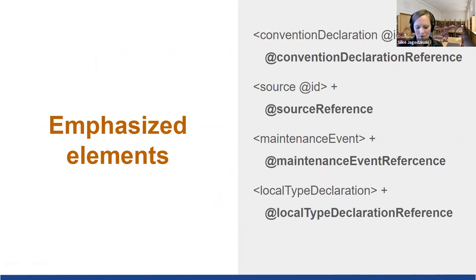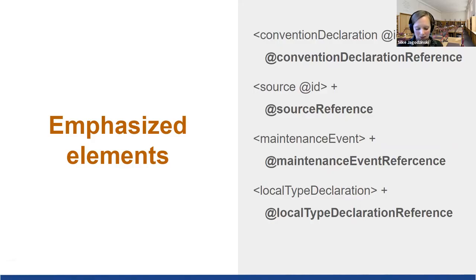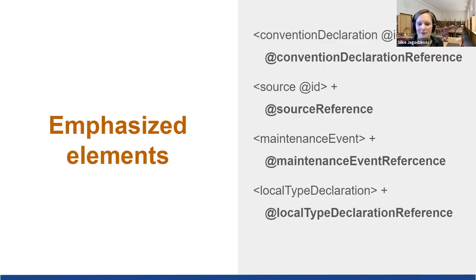The convention declaration in control will be used to provide conventions and rules for transliterations and for any forms of names. Information given in the elements source, maintenance event, and local type declaration lay the foundation for the description of an assertion to the EAC-CPF description. The optional attribute local type is used to support an element semantically, and the specification of values available in local type is given in the local type declaration. With new optional reference attributes, we are able to link to a specific convention declaration, maintenance event, source, and local type declaration — specifically to the ID attributes of the respective elements. Attribute names like convention declaration reference and local type declaration reference become favorites in the new schema.